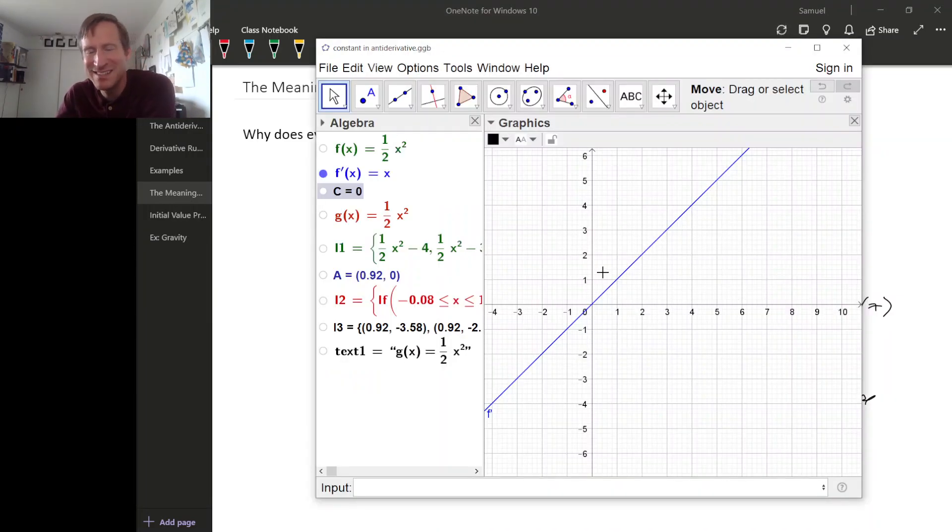So here's an example. It's set up a little unfortunately in that Geogebra wants to call the derivative function f prime instead of f, and the original function or the antiderivative little f instead of capital F.